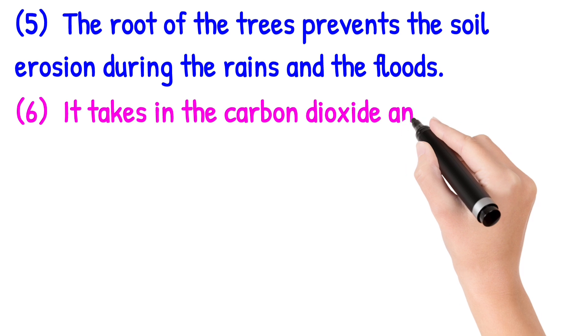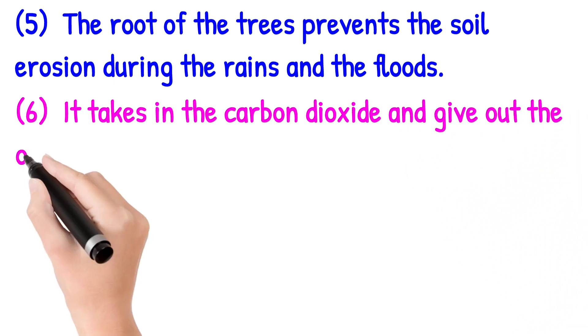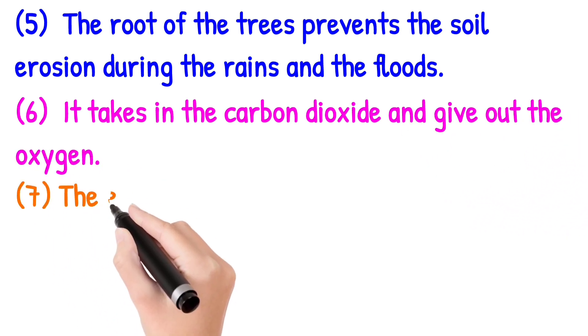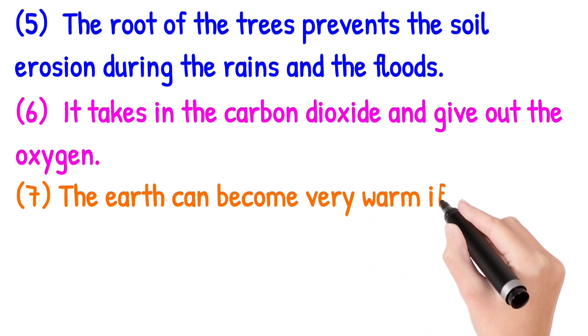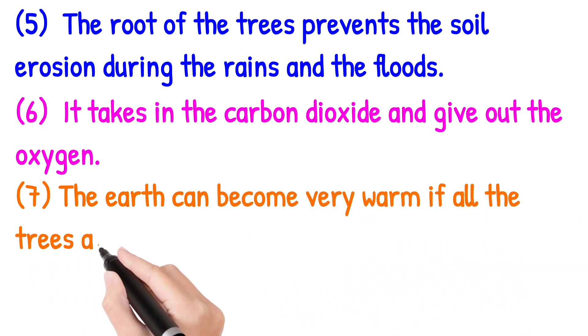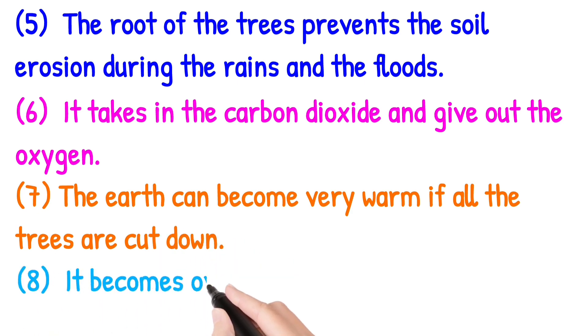Sixth point: Trees absorb carbon dioxide and give out oxygen. Seventh point: The earth can become very warm if all trees are cut down.